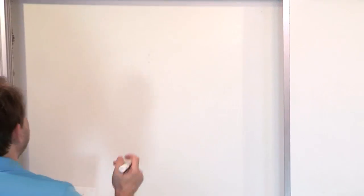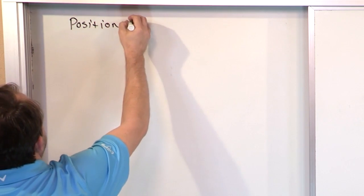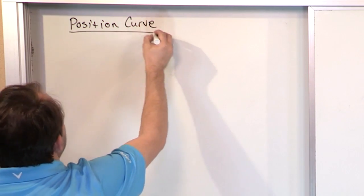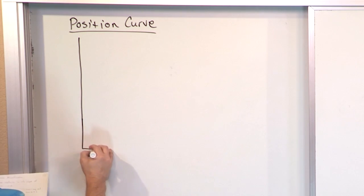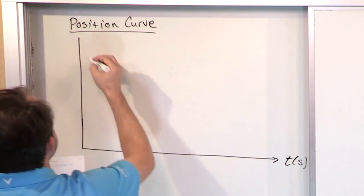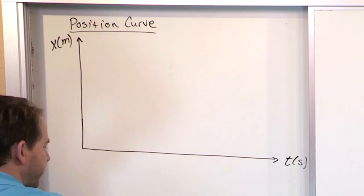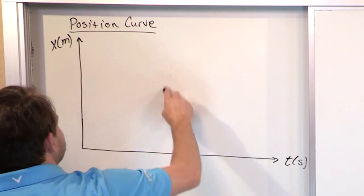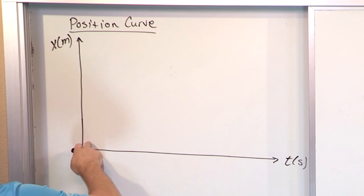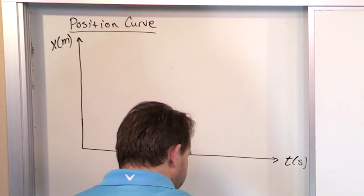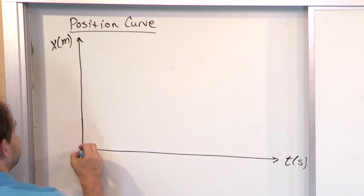I'm going to remind you of that again. We're going to talk about the position curve — and when I say position curve, what I'm talking about is position versus time. Let's draw it kind of big so we have enough room. We have time in seconds. I'm using this as motivation because the acceleration argument is going to be very similar.